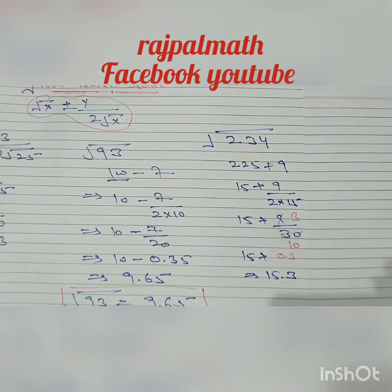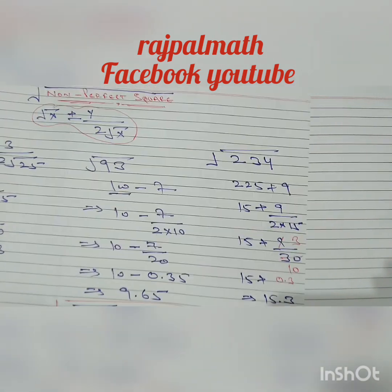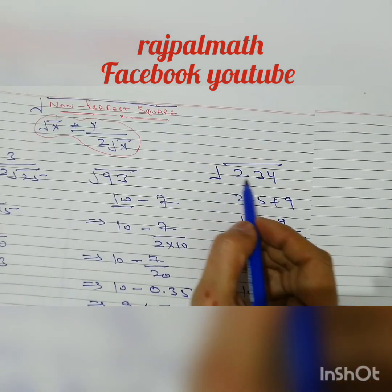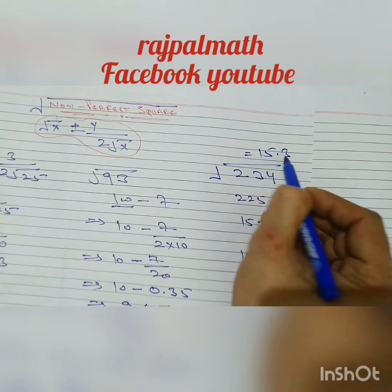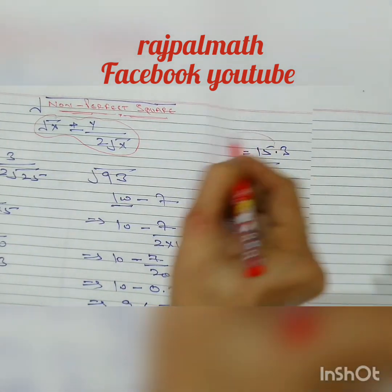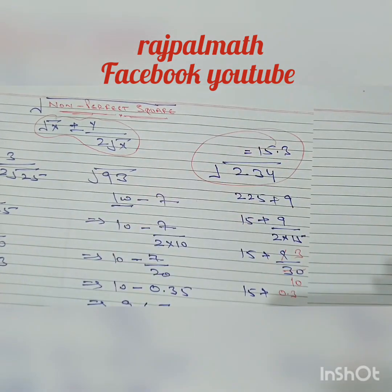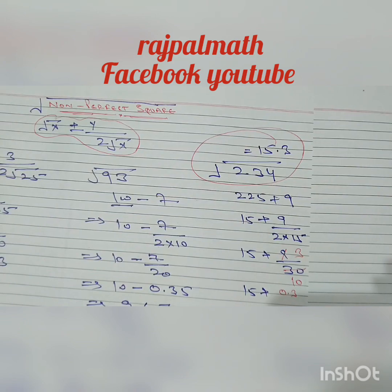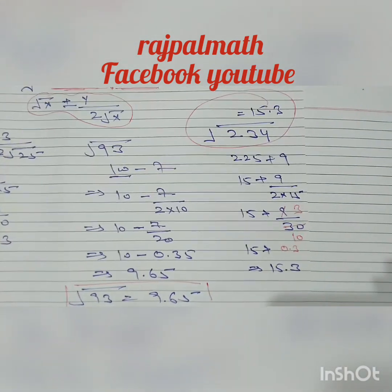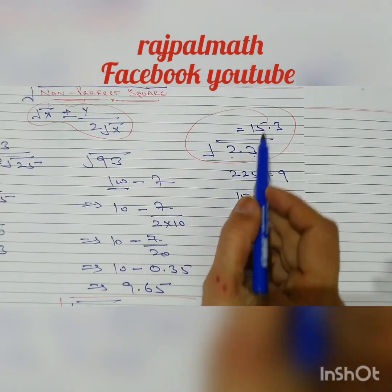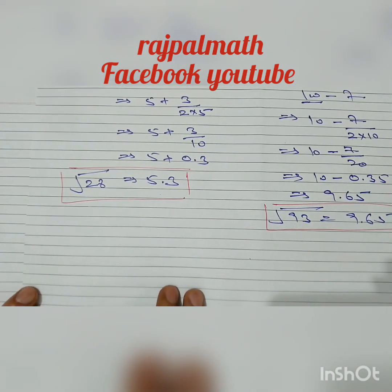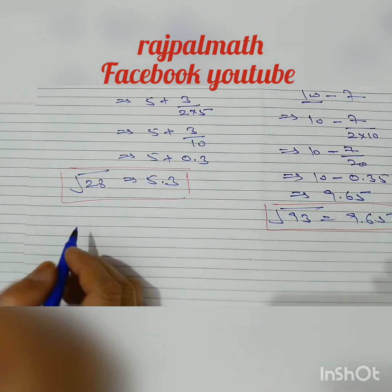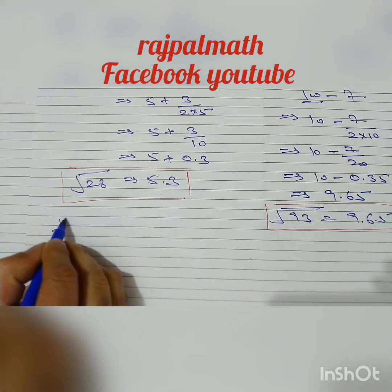This implies 15.3. Therefore, the square root of 234 equals 15.3. The root of 234 is 15.3. One more example: find the square root of 795.